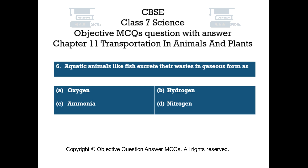Question number 6. Aquatic animals like fish excrete their wastes in gaseous form as? Option A: Oxygen. Option B: Hydrogen. Option C: Ammonia. Option D: Nitrogen.